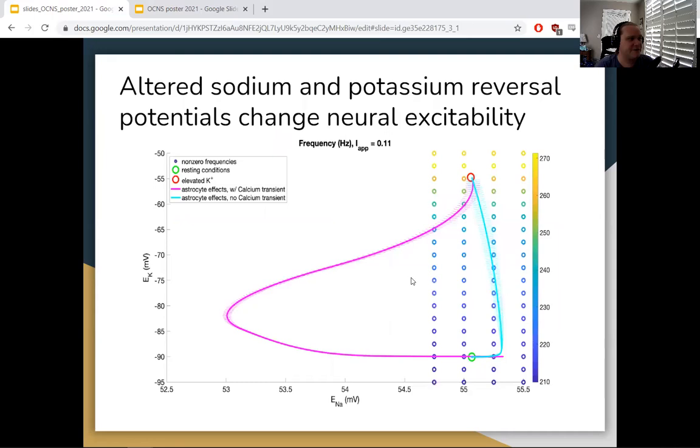What we find is that these changes in external sodium and potassium alter the corresponding reversal potentials for a nearby neuron. Here we show the firing frequencies of a nearby Wang-Buzsaki neuron stimulated by a step current at various sodium-potassium reversal potentials.